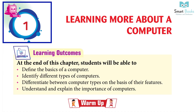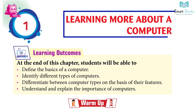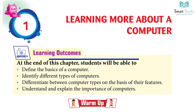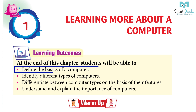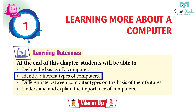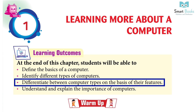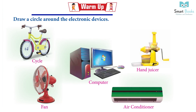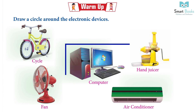Chapter 1: Learning More About a Computer. Learning outcomes: at the end of this chapter, students will be able to define the basics of a computer, identify different types of a computer, differentiate between computer types on the basis of their features, understand and explain the importance of computers. Warm up activity: draw a circle around the electronic devices — circle computer, fan, air conditioner.